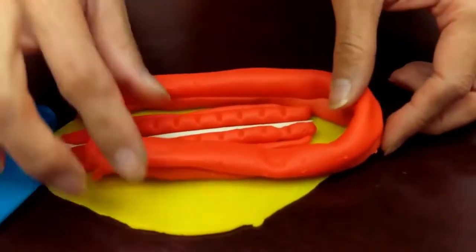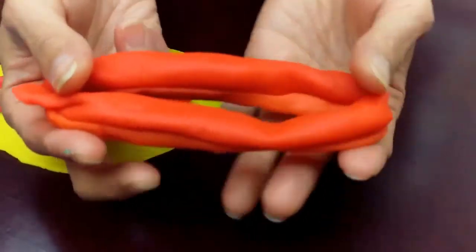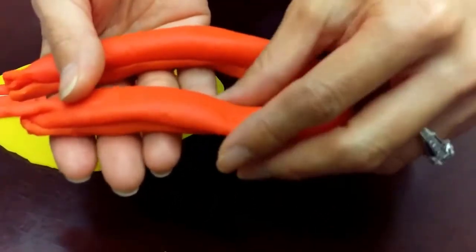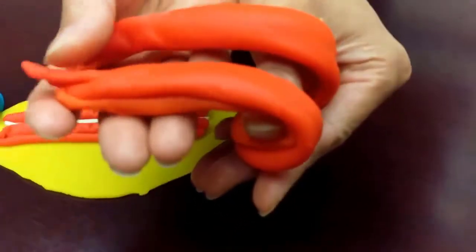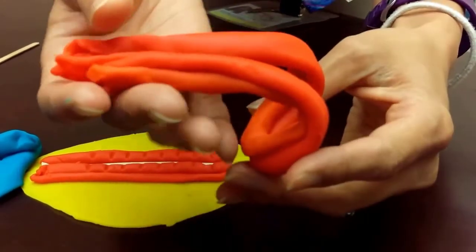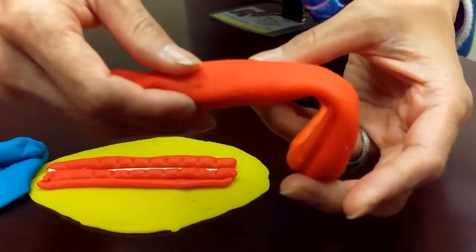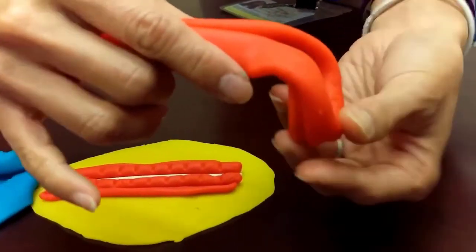Now let me take the lateral plate mesoderm out of the trilaminar germ disc to demonstrate what happens during embryonic folding. The cranial folding of the embryo swings this curved cranial ends of the lateral plate mesoderm ventrally and caudally. And the lateral folding below the level of the diaphragm will bring the right and left sides of the primitive vasculature of the embryo towards the midline so that they will eventually fuse.